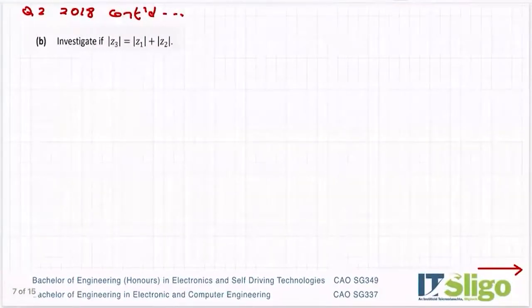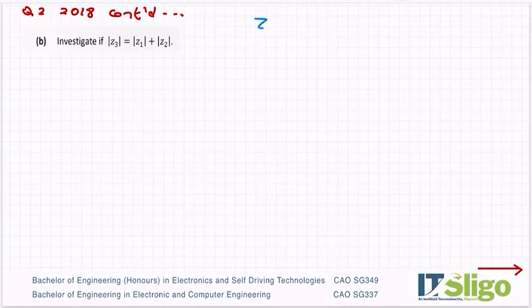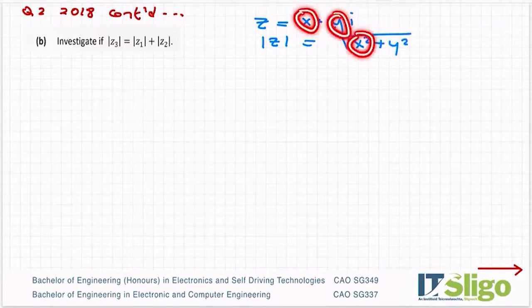Part B. Investigate if the modulus of Z3 is equal to the modulus of Z1 plus the modulus of Z2. OK. So for any complex number equal to x plus yi, or of course, this could be written as a plus bi, the modulus of it is then equal to the square root of x squared plus y squared.